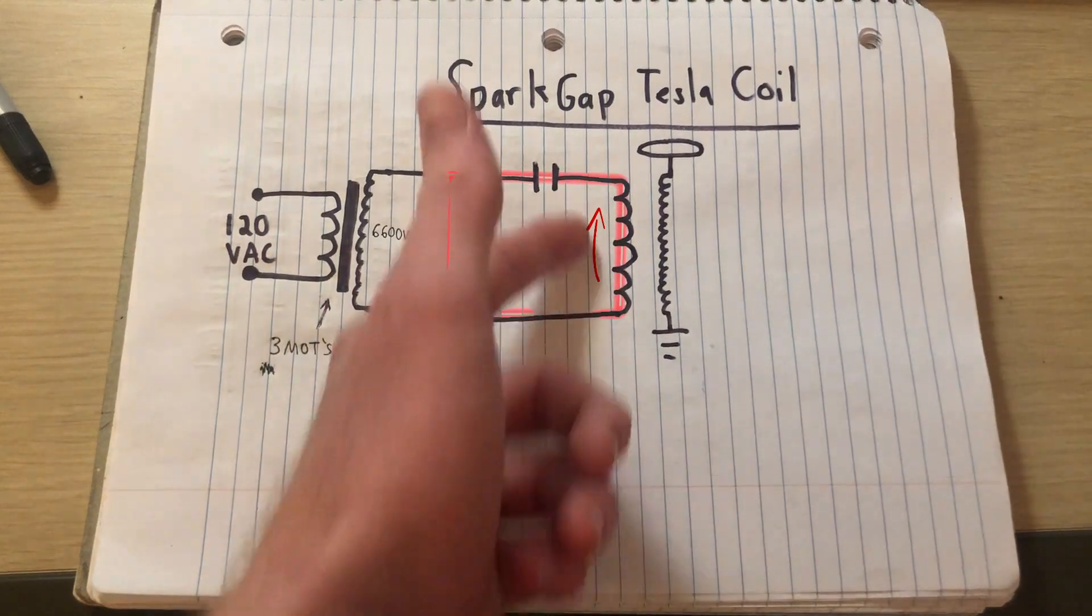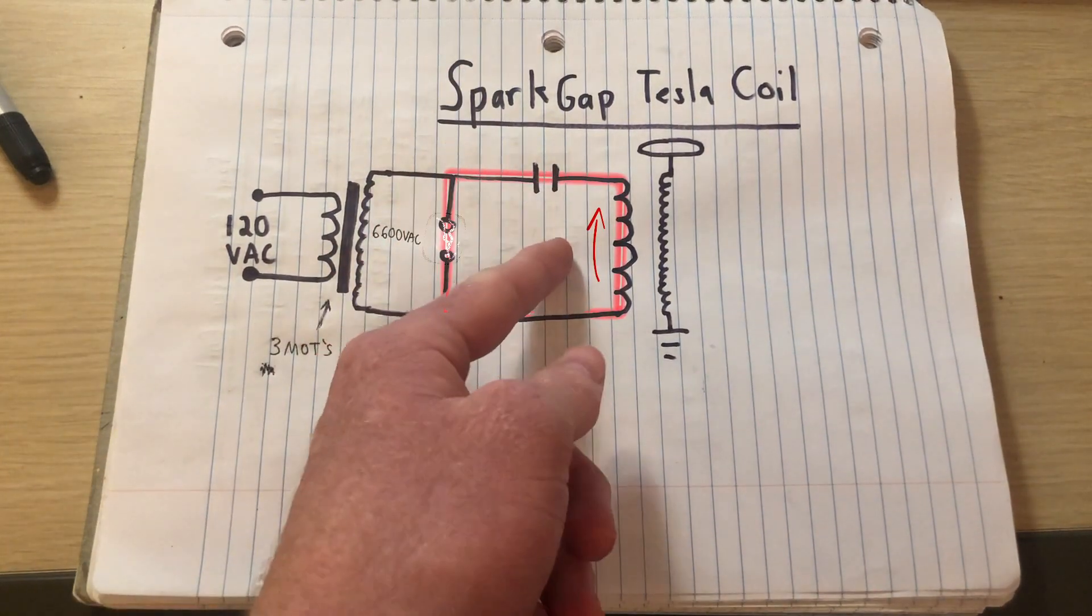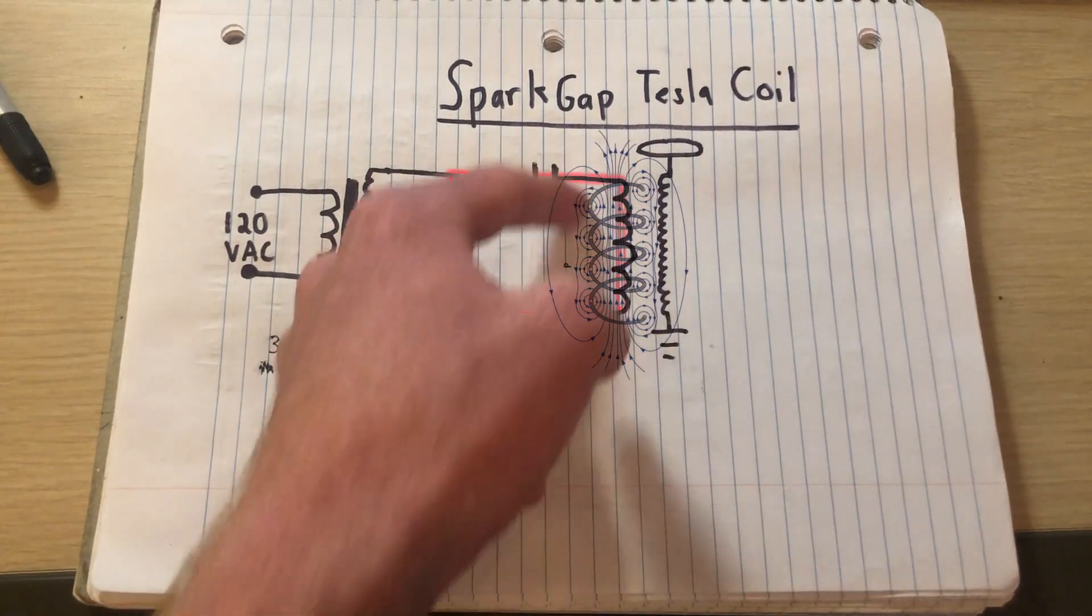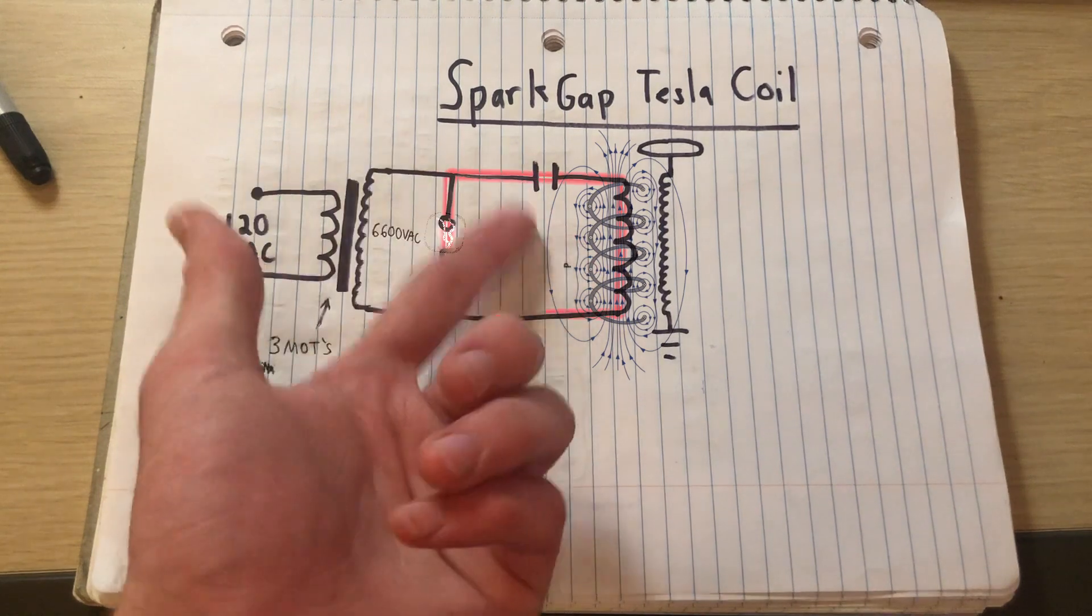So now that there's current flowing through this primary coil, there's also going to be a magnetic field around this primary coil, and that's in accordance with Ampere's law.